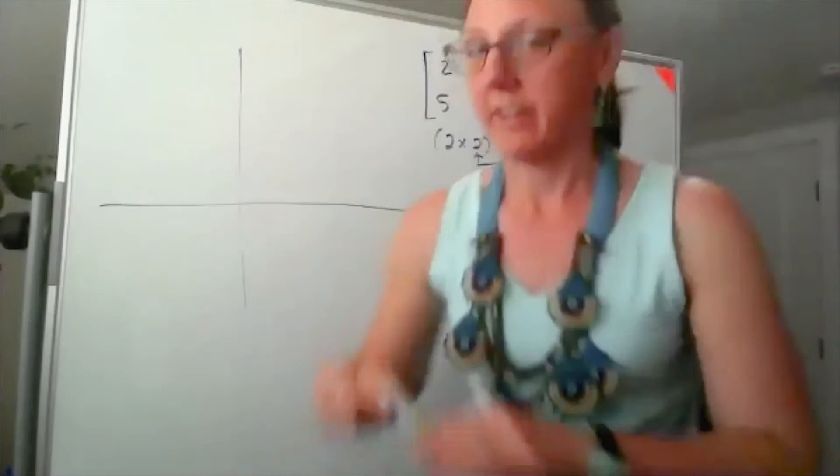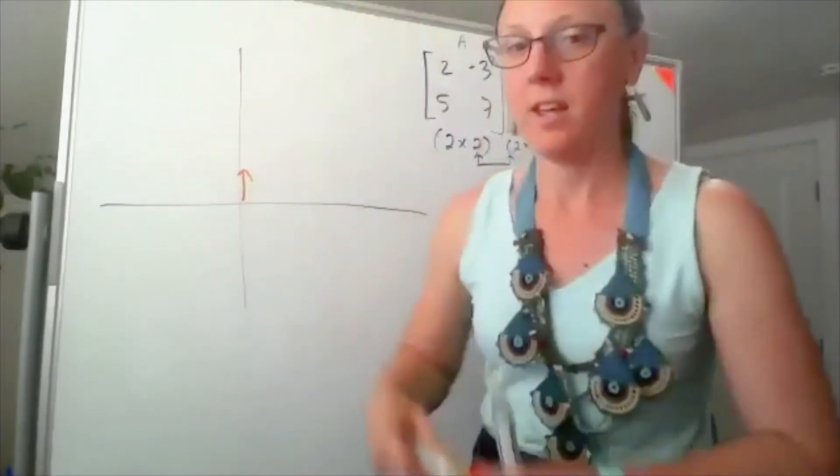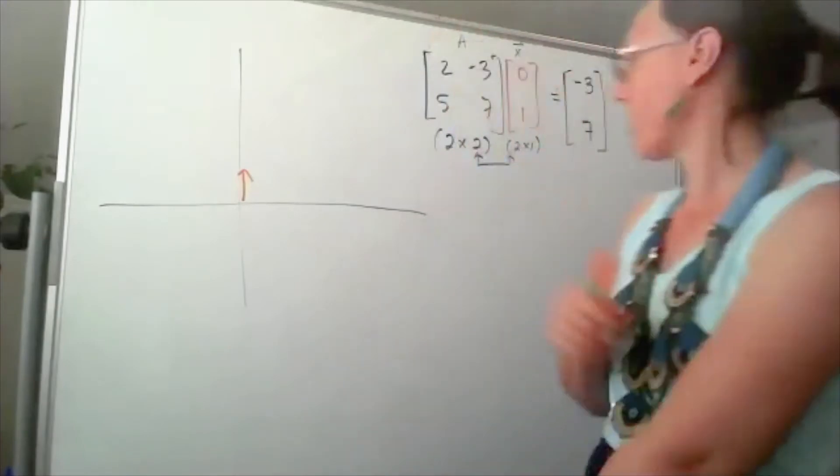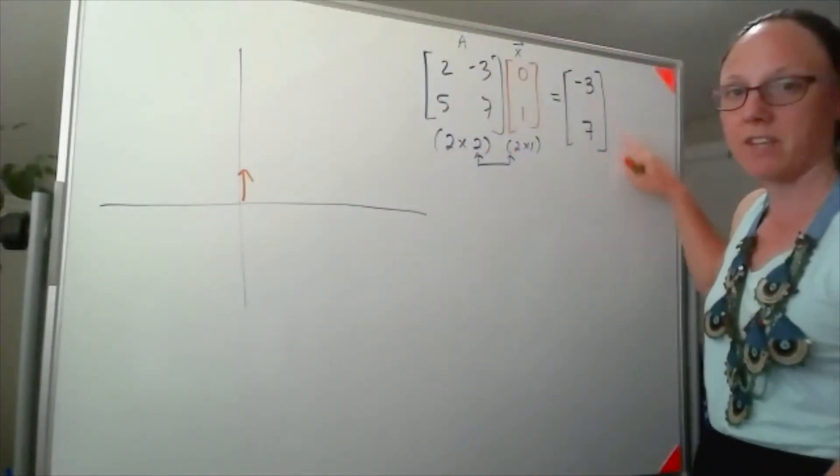Again, we started with the vector 0, 1, and now this vector has turned into the vector negative 3, 7. So that's 3 to the left and up 7.